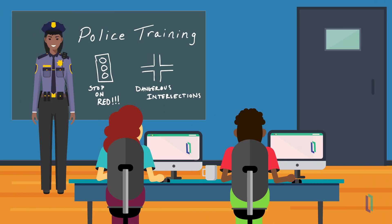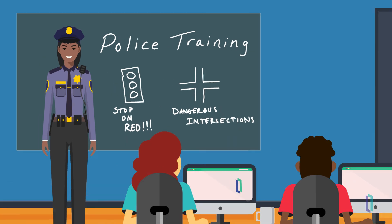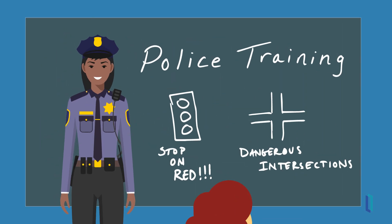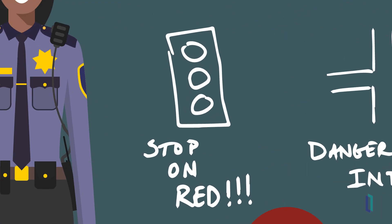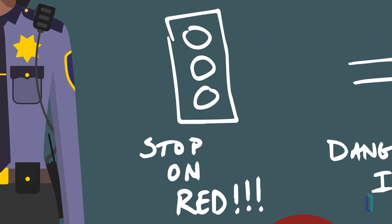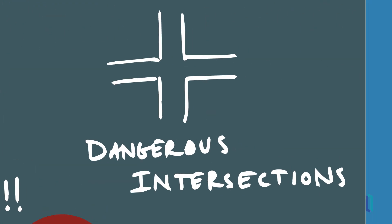Going back to our law enforcement example, this can help the police department build training programs to better educate the population on the impact of running red lights, or start projects to improve dangerous intersections.